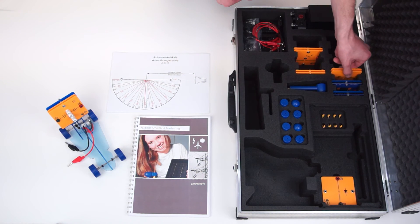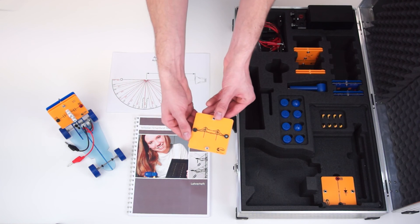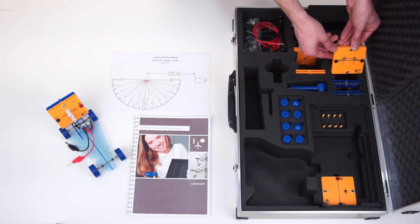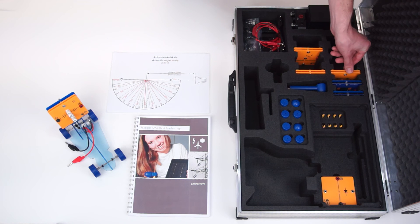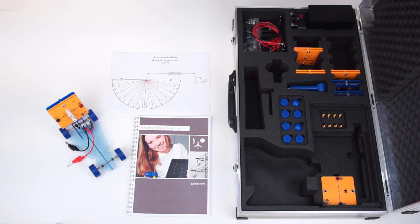For the simulation of line resistances grid modules are available in the case. They have like real power lines the property to heat up due to current flow.